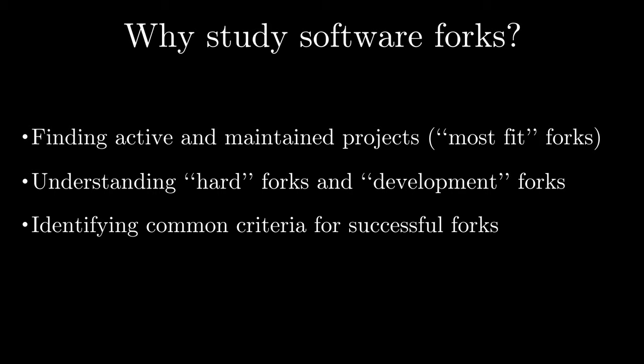The software evolution and software health fields are looking at ways to identify common criteria and metrics for what makes forks successful. More broadly, forks are becoming a key element of study in the current open source development process, which means there is a growing need for methods to identify and categorize them.